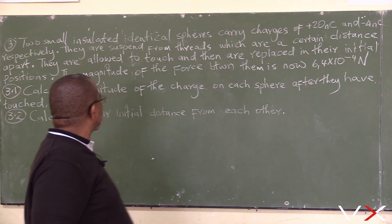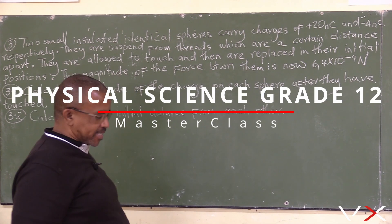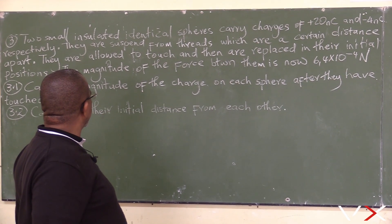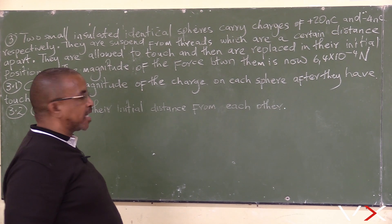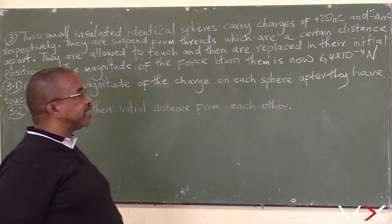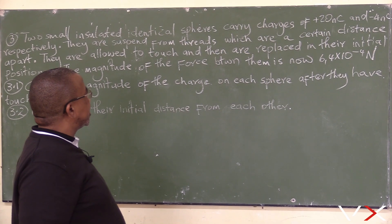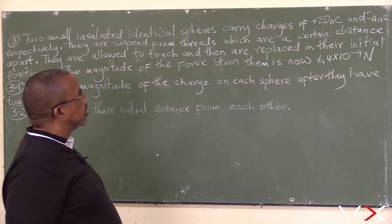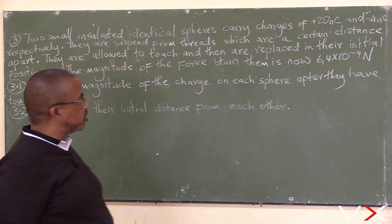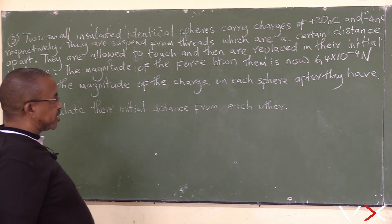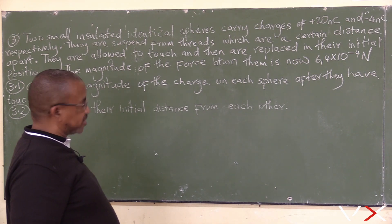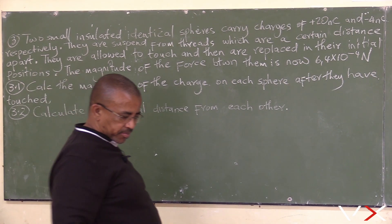Let's look at question number three. It involves two small insulated identical spheres. They carry charges of positive 20 nanocoulombs and minus 4 nanocoulombs respectively. They are suspended from threads which are a certain distance apart.